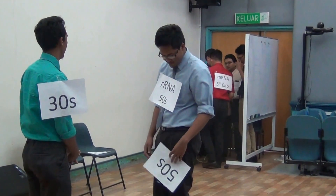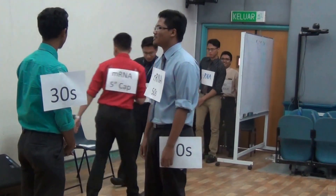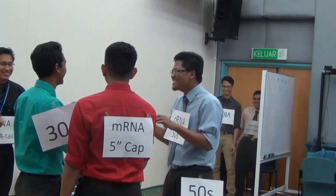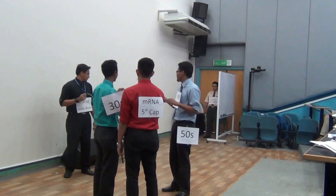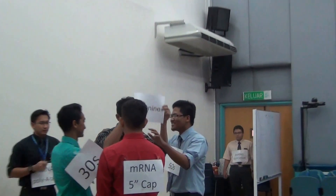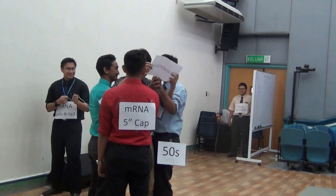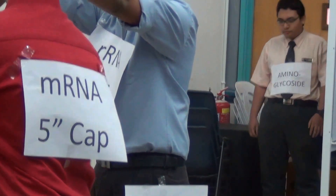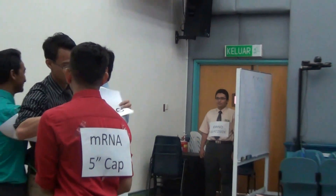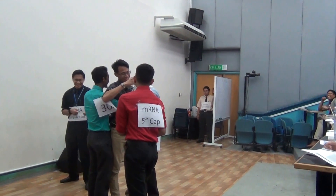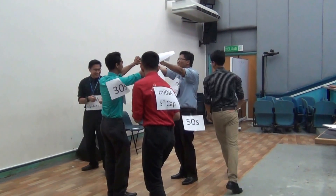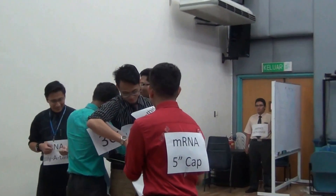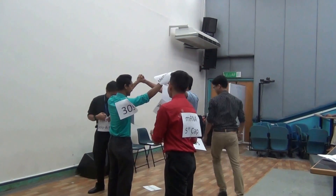Messenger RNA, which contains the complete coding sequence, binds to ribosomal RNA 30S subunit. Transfer RNA with its anticodon carries a specific amino acid that complements the mRNA. It starts with an amino acid code for methionine, followed by alanine, and then tyrosine.